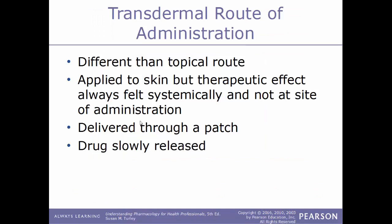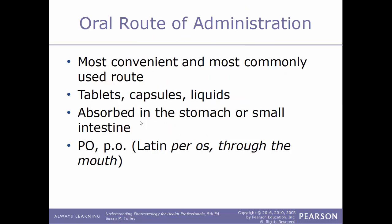The transdermal route of administration is slightly different from the topical route. It is applied to the skin, but the therapeutic effect is felt systemically rather than at the site of administration. This is often delivered through a transdermal patch as a slow-release drug. A good example is Nicoderm, which helps people stop smoking — applied as a patch but felt systemically as a very slow release of nicotine.